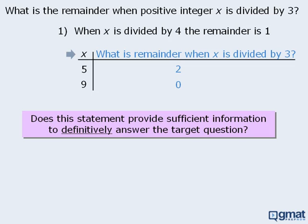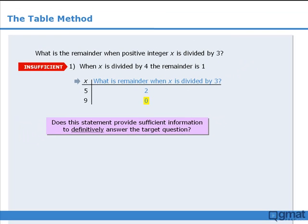So when x equals 5, the answer to the target question is 2, and when x equals 9, the answer to the target question is 0. Since we cannot definitively answer the target question, statement 1 is not sufficient.